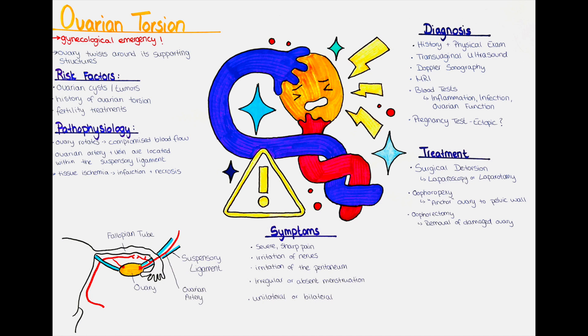Fertility treatments can lead to an increase in the size of the ovaries and can predispose for the development of ovarian cysts. Ovarian torsion is more common in women of reproductive age, typically between the late teens and early forties.